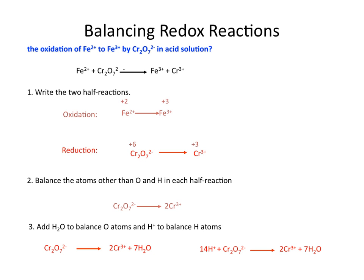Let's look at the balancing of redox reactions. When we're balancing redox reactions, we're not only balancing the number of each atom type, we're also considering the balancing of the number of electrons that have been transferred between your oxidizing agent and reducing agent. For example, the oxidation of iron +2 to +3 by dichromate in an acidic solution. We'll talk about what we mean in terms of identifying if it's acidic or basic and how that changes your procedure.